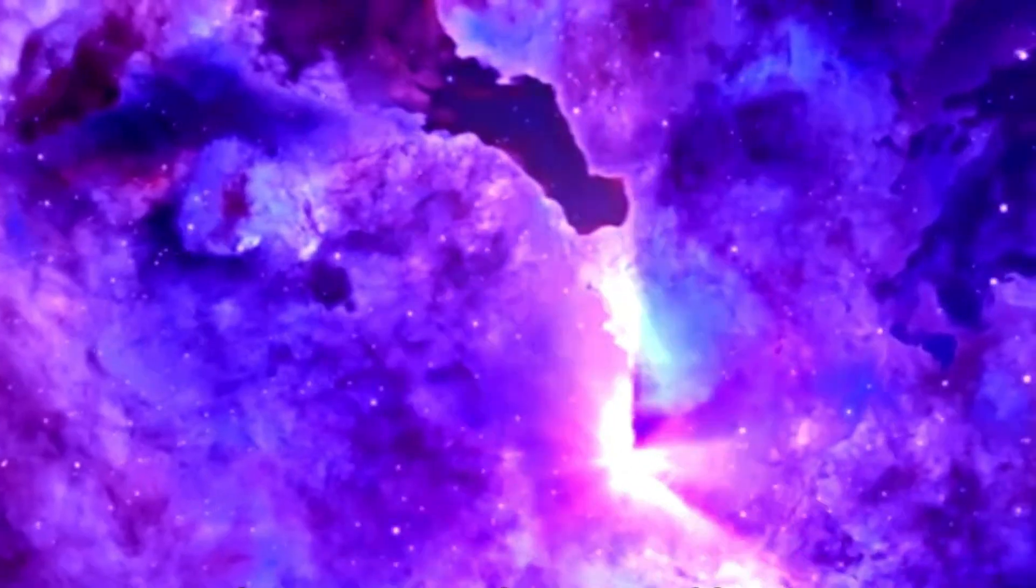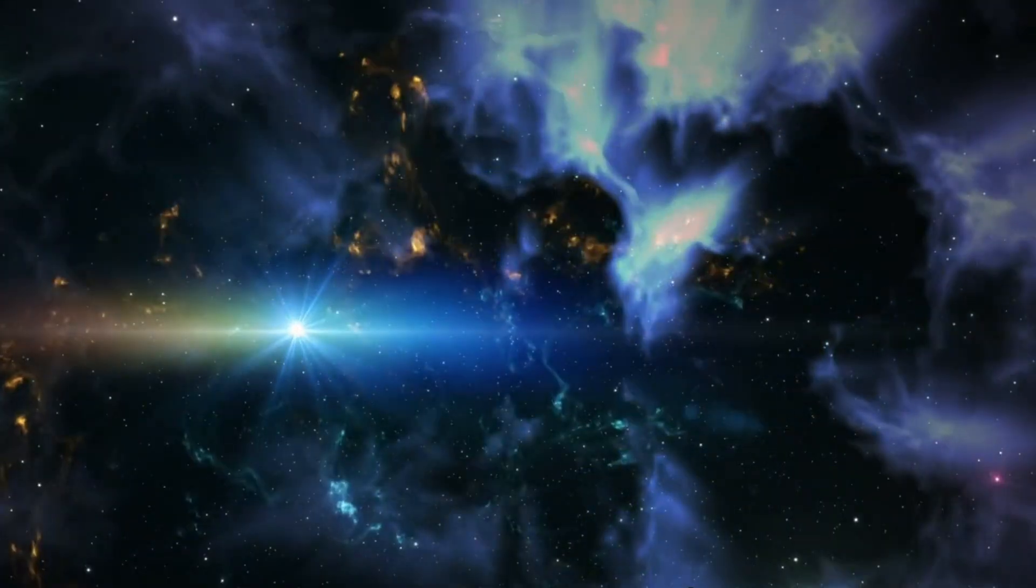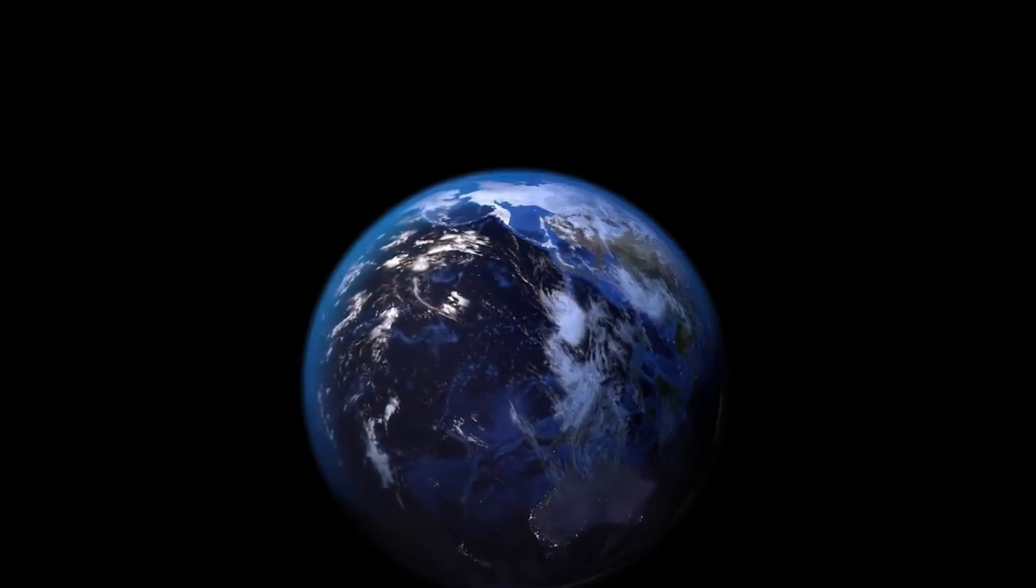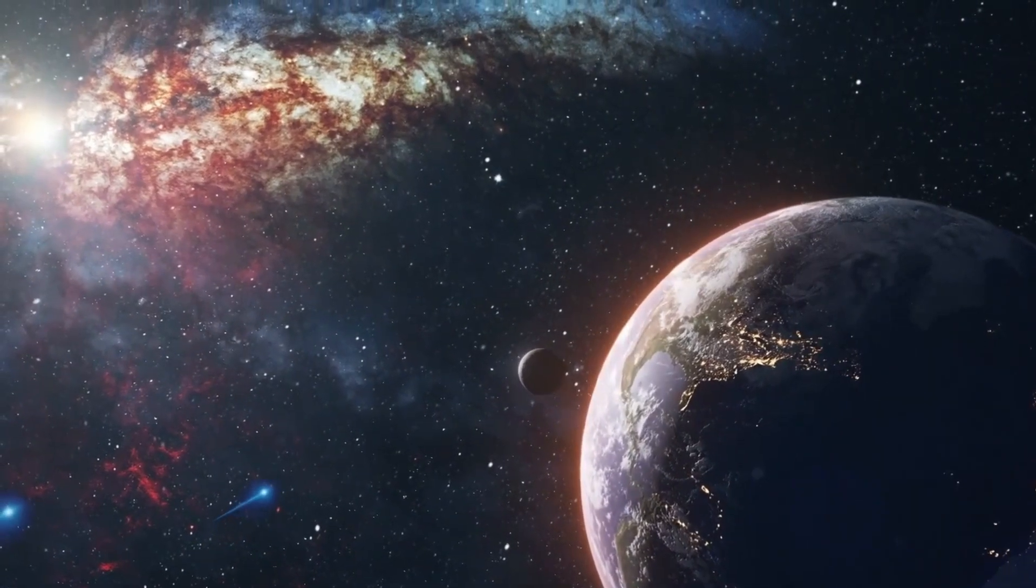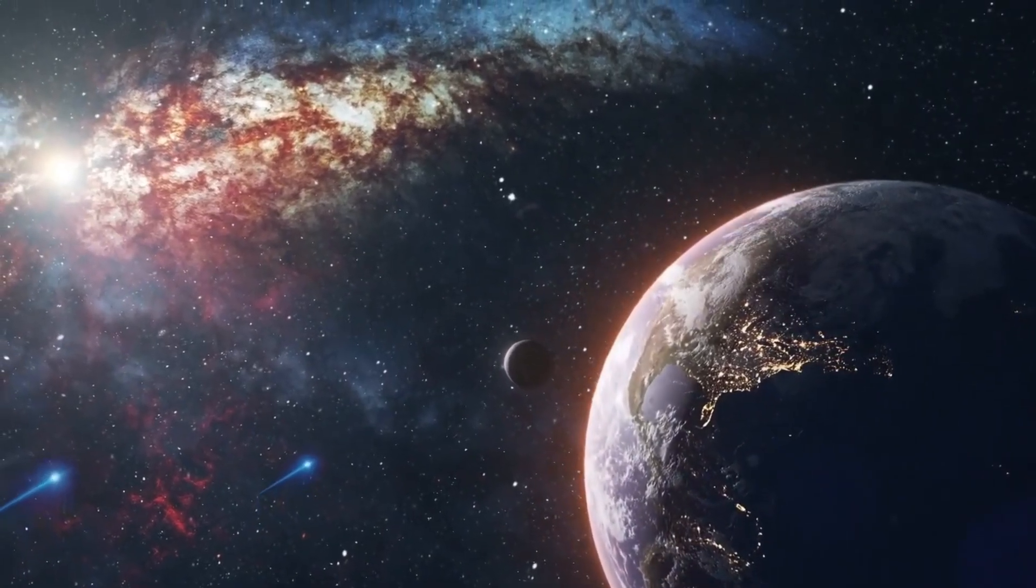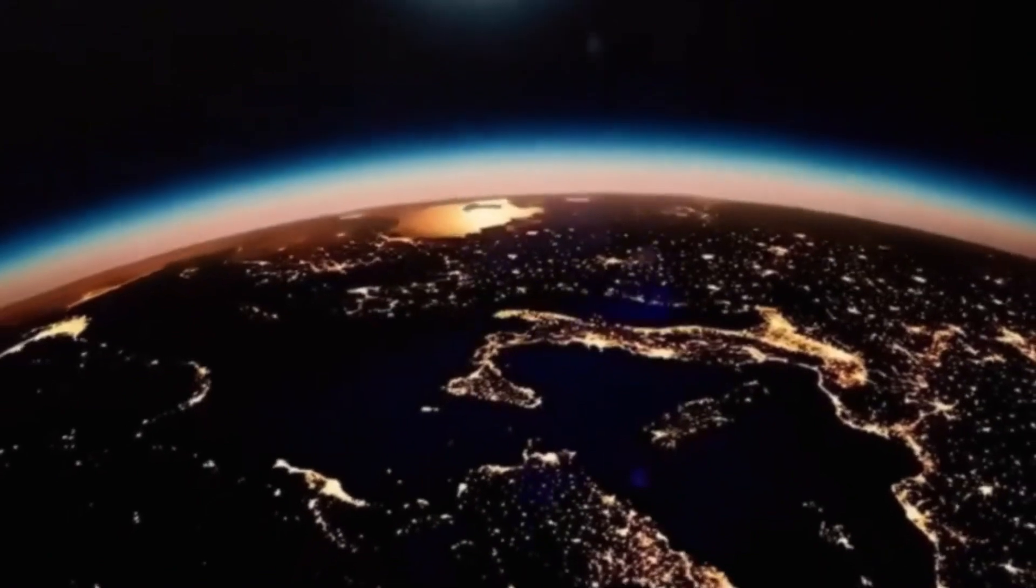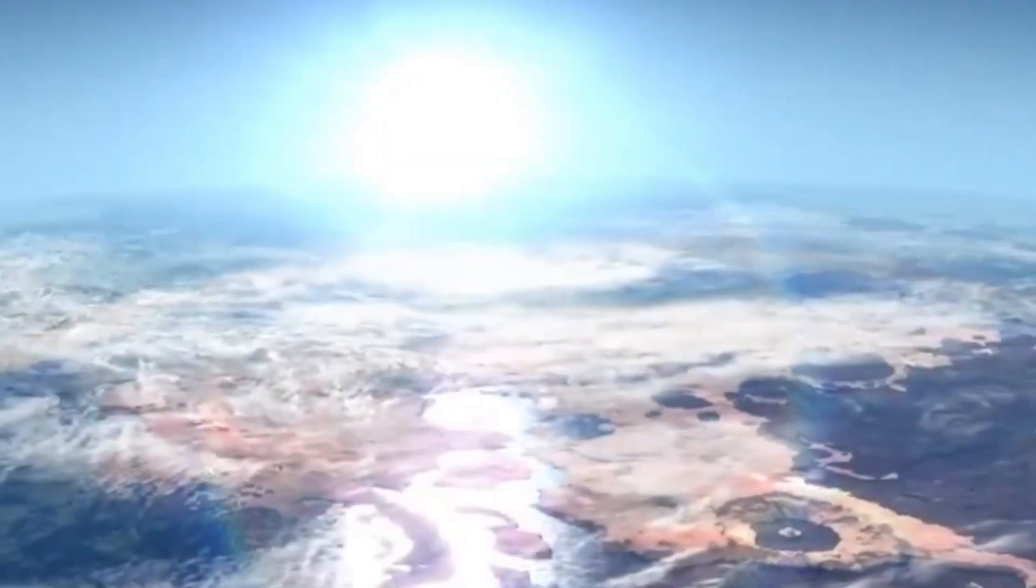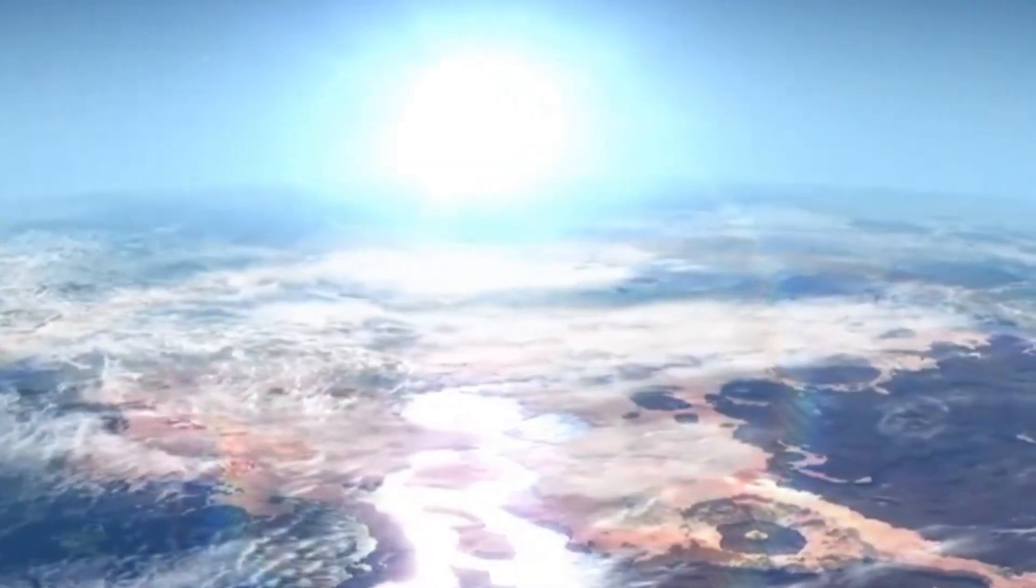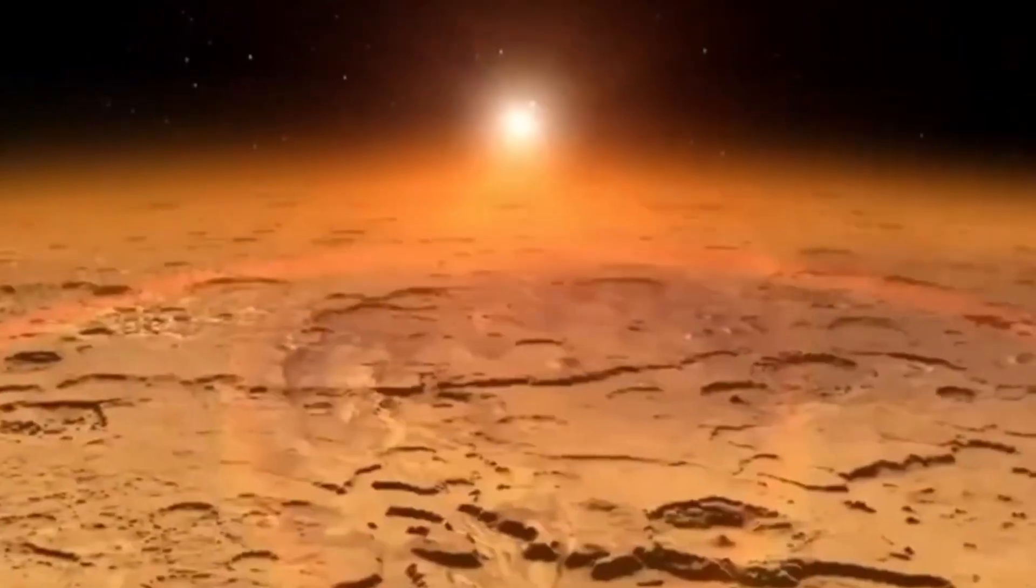There are two likely scenarios for the atmosphere of Proxima Centauri b. In one case, it is possible that the planet's water condensed and the hydrogen was lost to space, resulting in only oxygen or carbon dioxide remaining in the atmosphere after the planet's early history. On the other hand, it is also possible that Proxima Centauri b had a primordial hydrogen atmosphere or formed farther away from its star, which would have limited the escape of water. This suggests that Proxima Centauri b may have retained its water beyond its early history.